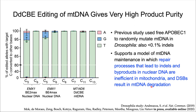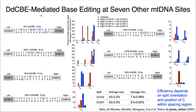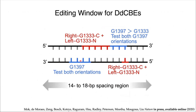To demonstrate the generality of DdCBEs, we designed seven other variants to target different sites within the mitochondrial genome. Each DdCBE was tested in its four possible split orientations shown by the red and blue bars. On average, we observed a range of editing efficiencies between 10 to 40%, depending on factors such as split orientation and the position of the cytidine within the spacing region. Analyzing the edited sites gave an idea of the approximate editing window: position your target base within the optimal window, count out 14 to 18 base pairs, and design your TALEs to bind to the flanking sites.